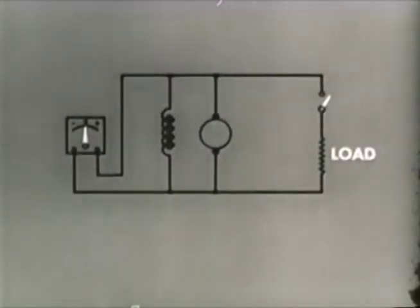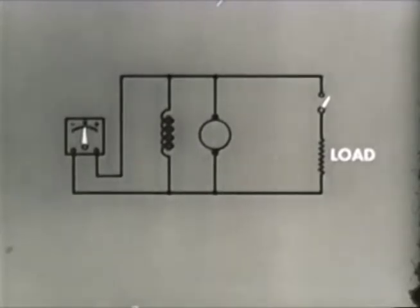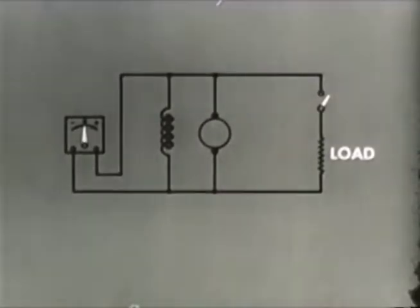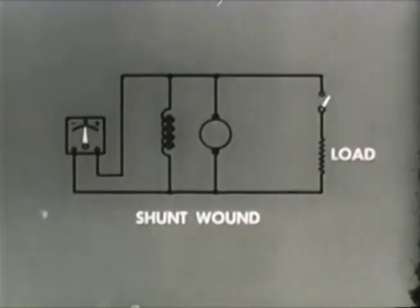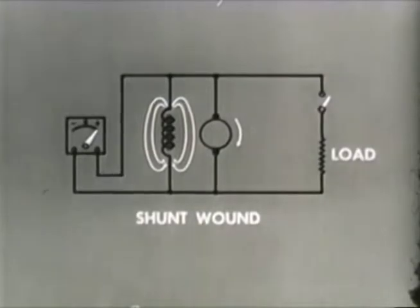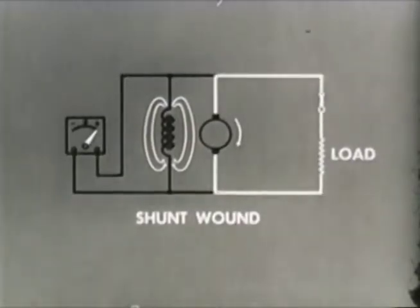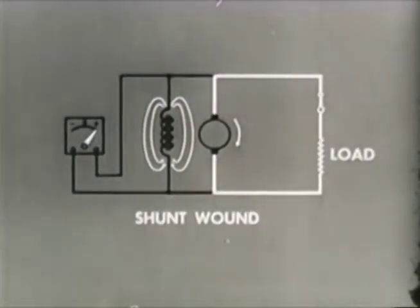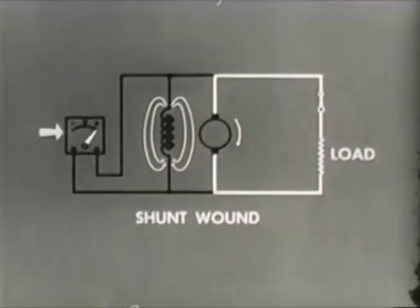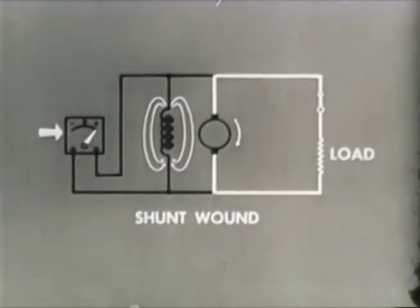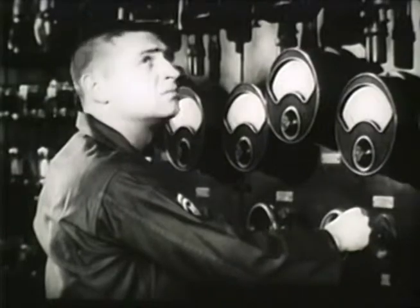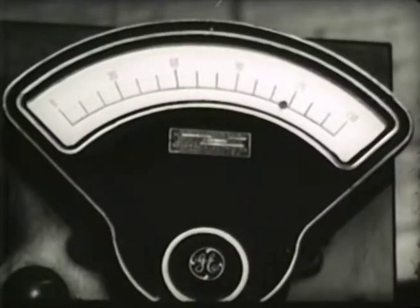When instead of in series, the field winding is connected in parallel with the armature and the load, we have a shunt-wound generator. Now the field current is independent of the load current. Therefore, an increase in armature current will not cause an increase in the voltage output. Voltage regulation here is greatly improved. In shunt-wound generators, changing load causes relatively small change in voltage output.